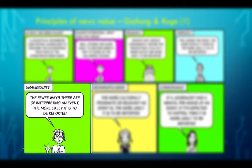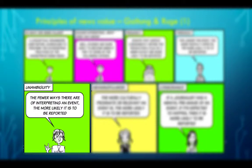Unambiguity: the fewer ways there are of interpreting an event, the more likely it is to be reported. Reporters have to cover many different subjects and cannot be experts in all of them. In places like Malta, expertise and specialization is very difficult, and therefore most journalists are a sort of jack-of-all-trades. So if the event is quite clear to understand, it is more likely that reporters will report it more faithfully.